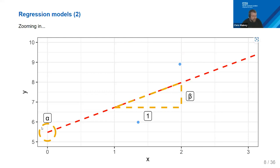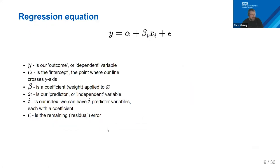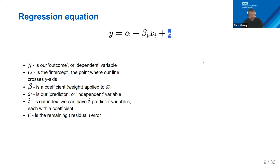For each unit increase in X, how much does our line increase? We refer to that as beta — a coefficient. So Y equals the intercept plus beta times X, plus some error because the dots were never actually on that line. This formula lets us predict Y using X.